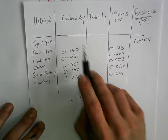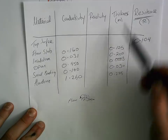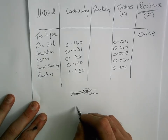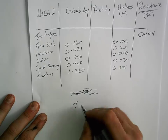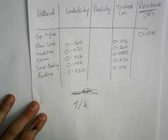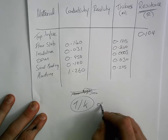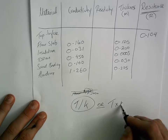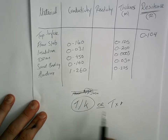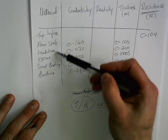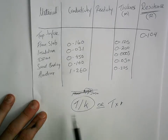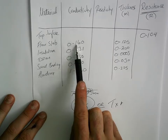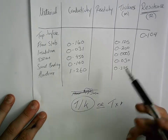Whether you're given conductivity or resistivity, you need the thickness to work out resistance. The formula is: resistance equals thickness divided by conductivity. That's the one we're using today. Alternatively, if you have resistivity, resistance equals thickness multiplied by resistivity — but that doesn't apply today. Learn off both formulas. For the floor slab, take thickness 0.125 divided by conductivity 0.160.